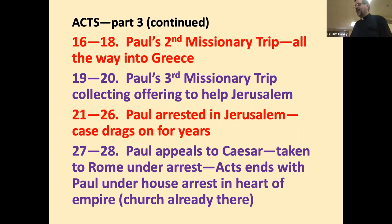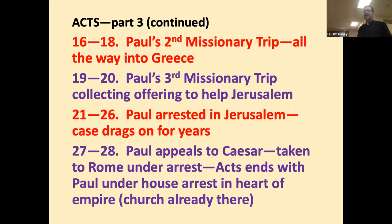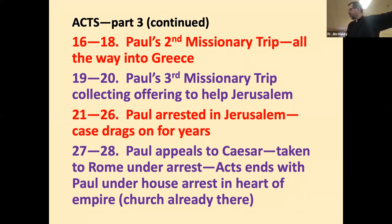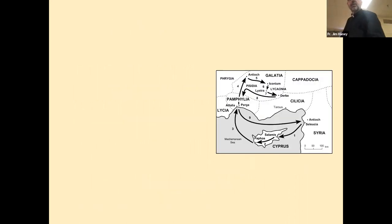While Paul is in Jerusalem delivering the offering, he gets arrested. The case drags on through multiple governors for years. Paul eventually appeals to Caesar, and the governor says, 'I was about to set you free, but if you appeal to Caesar, you shall go.' Acts ends with Paul under house arrest in Rome, waiting for trial. We think Paul was released afterward and spent more years doing missionary work — possibly going to Spain — before eventually being martyred in Rome.